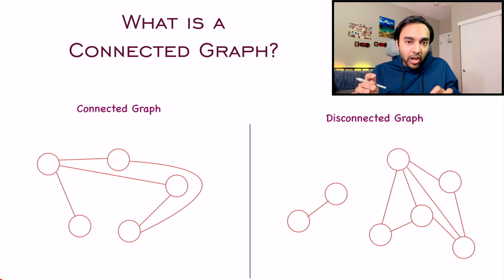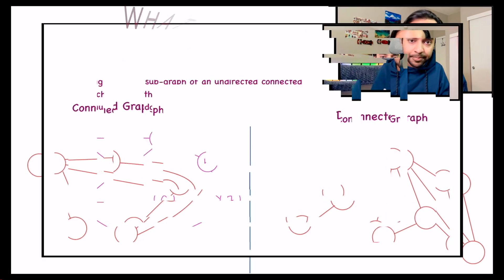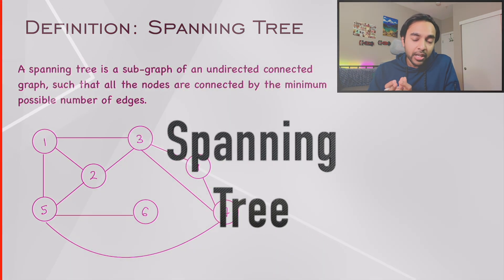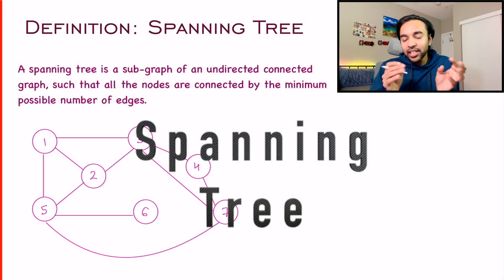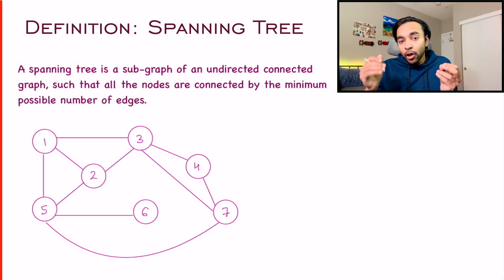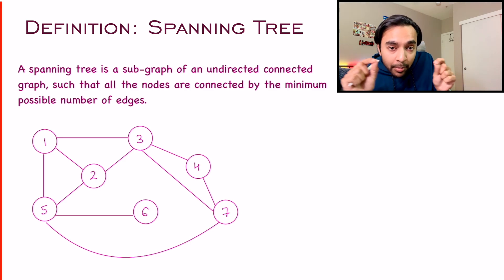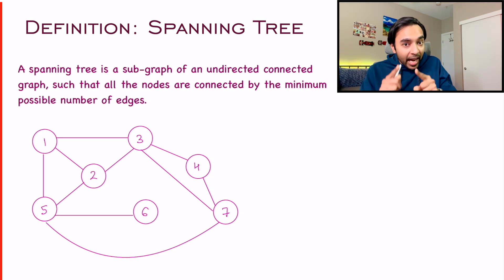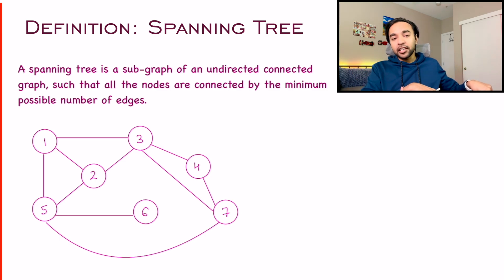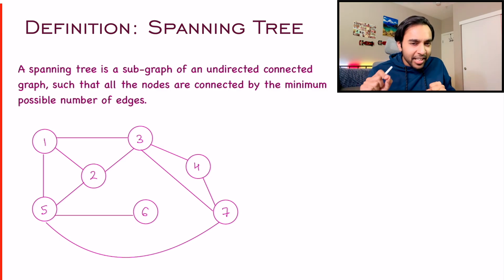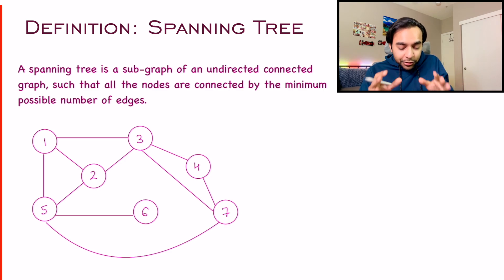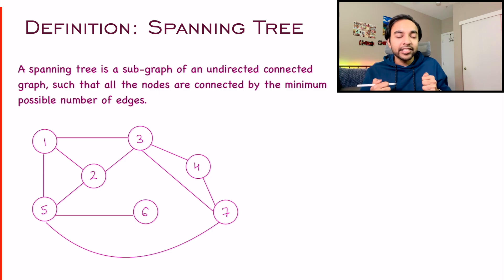If you want to make the disconnected graph into a connected graph, you just need to connect one of these nodes to any of the other nodes in your graph. Now let us move on to a spanning tree. A spanning tree is nothing but a subgraph of an undirected connected graph such that you have the minimum number of edges and still the graph remains connected.